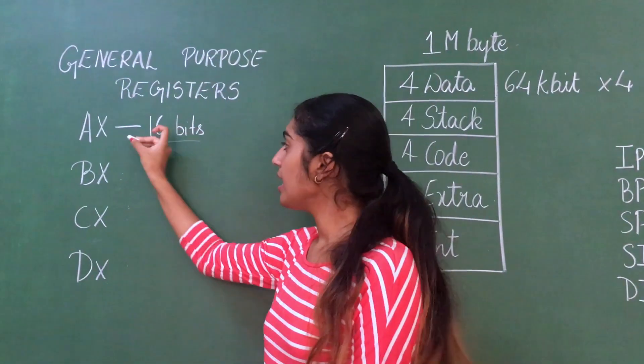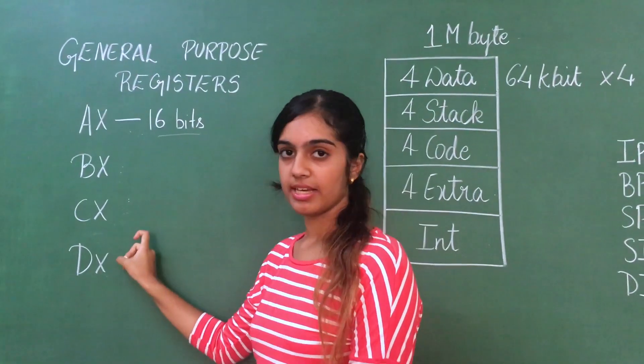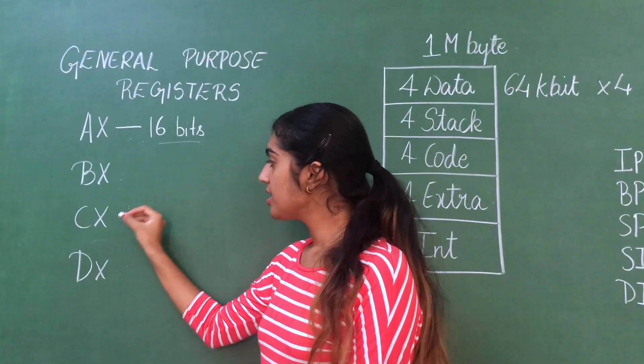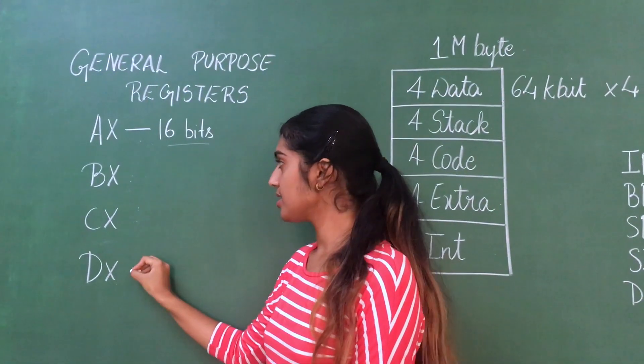In assembly language, there are general purpose registers: AX, BX, CX, and DX. AX is arithmetic register, BX is address register, CX is count register, and DX is extra. Each of these registers is 16 bits.